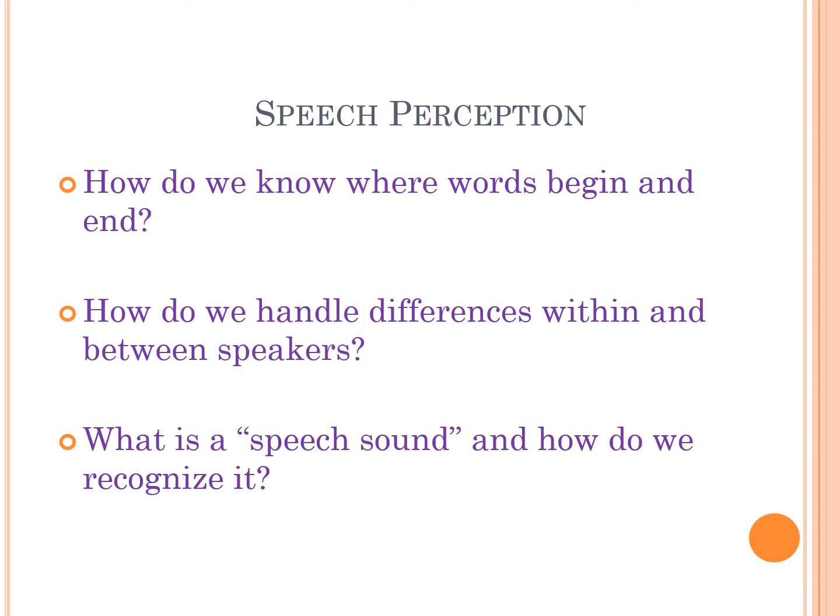How do we handle differences within and between speakers? We use a lot of context and we have categorical perception, such that even though there's lots of variance in what a phoneme might sound like — someone from the South, New York City, or Chicago saying 'bat' — we usually hear those as the same sound even if we notice dialectal differences. And if there is real ambiguity, we use context.